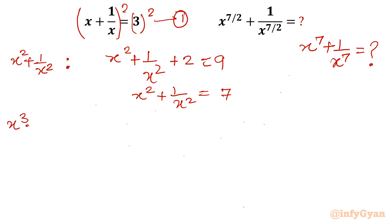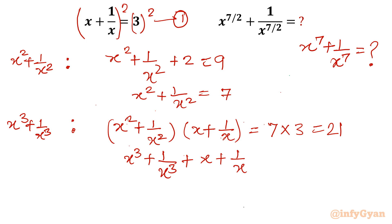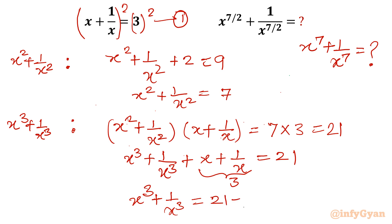Now let's find x cube plus 1 over x cube. I will multiply x square plus 1 over x square by x plus 1 over x — I am not going to take whole cube, just take the product. So 7 times 3 equals 21. Expanding the LHS, you get x cube plus 1 over x cube plus the cross product terms x plus 1 over x, equal to 21. This cross product value is 3, so x cube plus 1 over x cube equals 21 minus 3, which is 18.